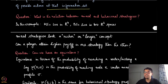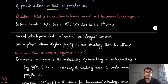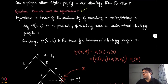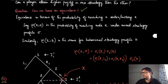We can ask questions like: can a player attain a higher payoff in one strategy than the other? And the most important question is: can we have an equivalence? In which kinds of games can we have equivalence so that we really don't need to think about whether it is a mixed strategy or a behavioral strategy — we can use them interchangeably? To talk about equivalence, we first define it in terms of the probability of reaching a particular vertex or history X.